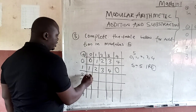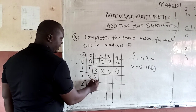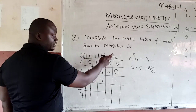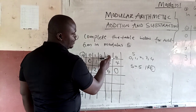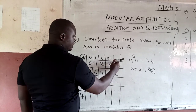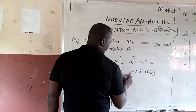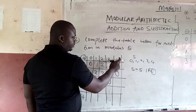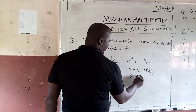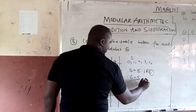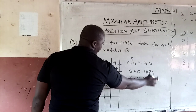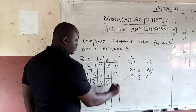So 2 plus 0 is 2. 2 plus 1 will give you 3. 2 plus 2 will give you 4. 2 plus 3 will give you 5. 5 divided by 5 gives you 1, remainder 0. So you have 0 here. 2 plus 4 will give you 6. 6 divided by 5 gives 1, remainder 1. So you put 1 here.